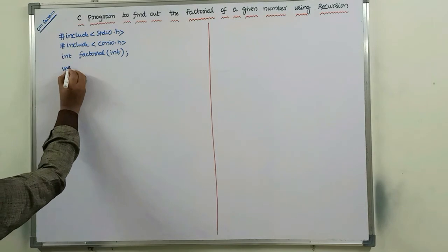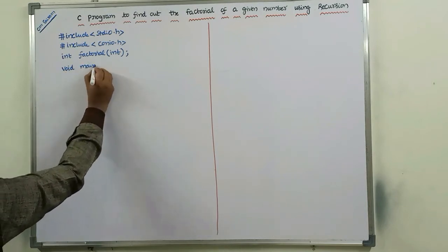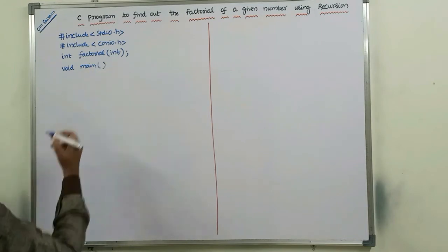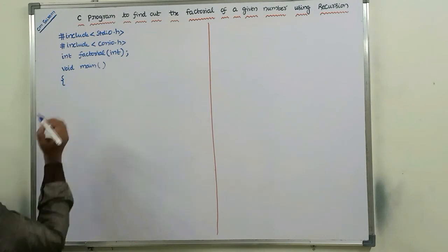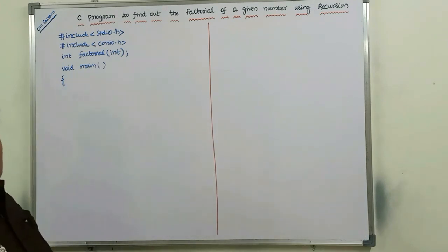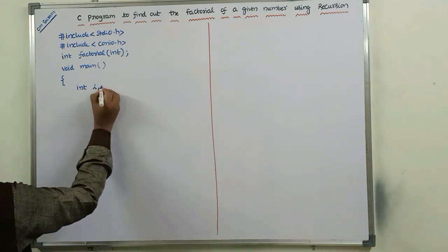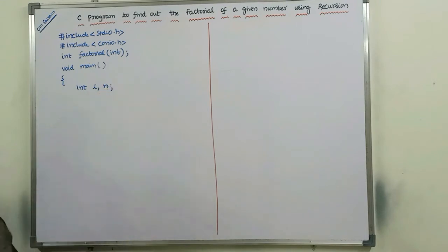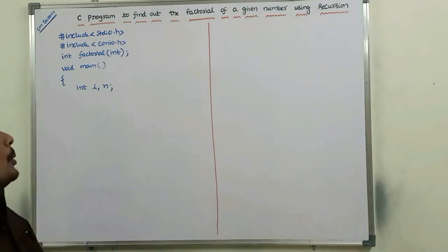void main — every C program starts its execution with the main function. We press the opening brace. What are the variables we have to declare? Here, we are declaring two variables: int i, n. i is nothing but a loop variable. n is nothing but the number for which we have to find out the factorial.